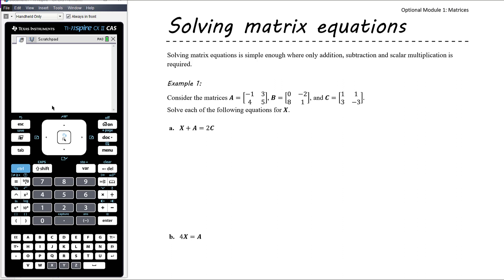So if we're only needing to add, subtract, and multiply by a number — and that could also be dividing by a number, because when we divide by two we're multiplying by one half, so we're still multiplying by a number — then there's no issue. But the minute we have need to multiply or divide by a matrix, the process becomes a lot more complicated. So let's look at this example where we shouldn't need any new techniques; it's simply about solving the equation.